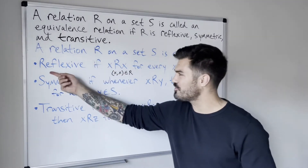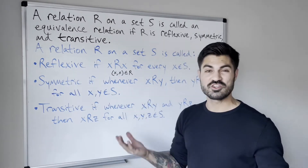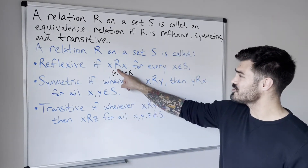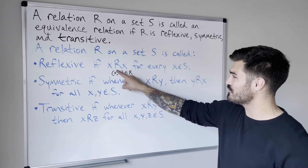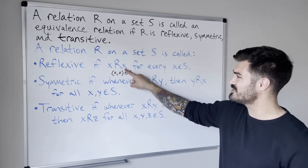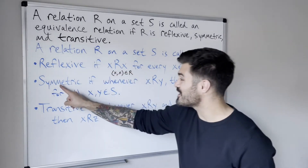And by reflexive, we can sort of think of — to remember this — reflection. X is looking at its own reflection in the mirror; X related to X.